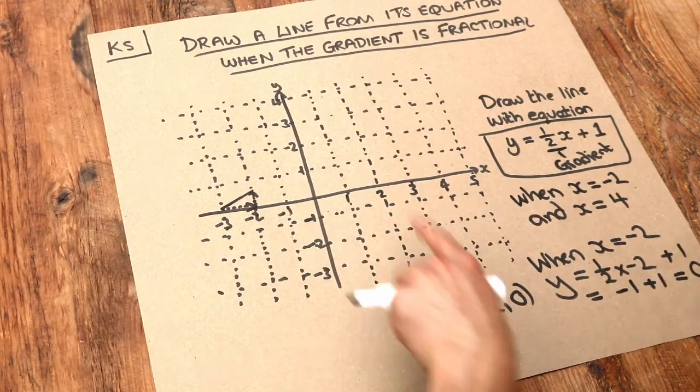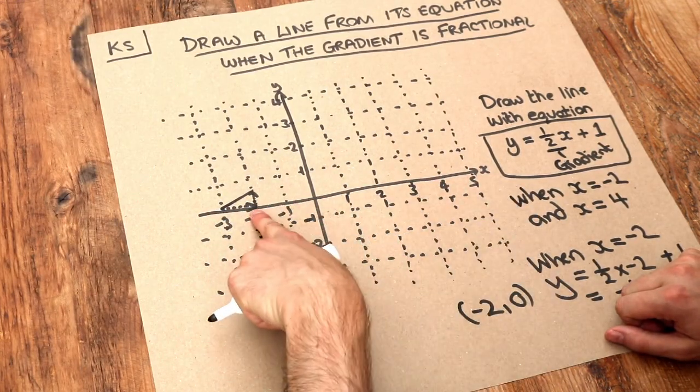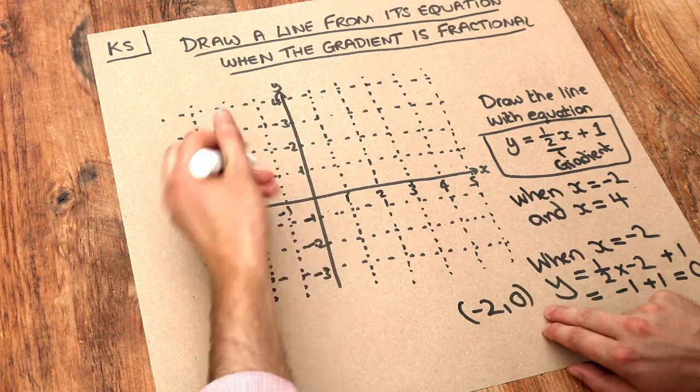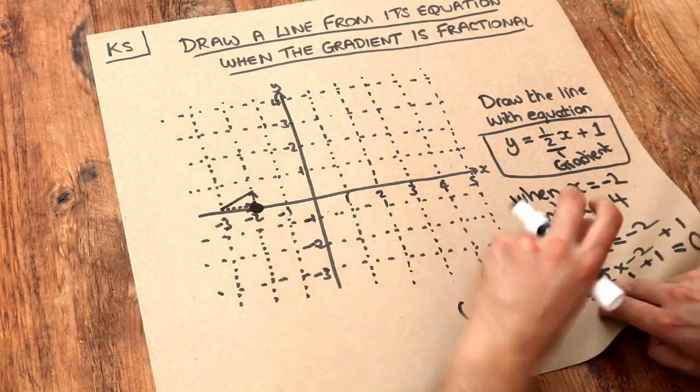If we plot that, minus 2 on the x axis, so minus 2 is here, and then 0 on the y axis, you don't go up or down, you just stay here, so it will be here, our first point.